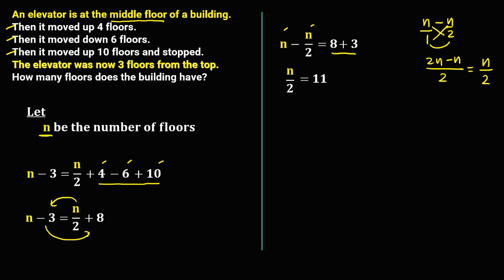Then to solve for n, do cross multiplication, so n times 1, that's n, equals 2 times 11, that's 22. So this building has 22 floors.